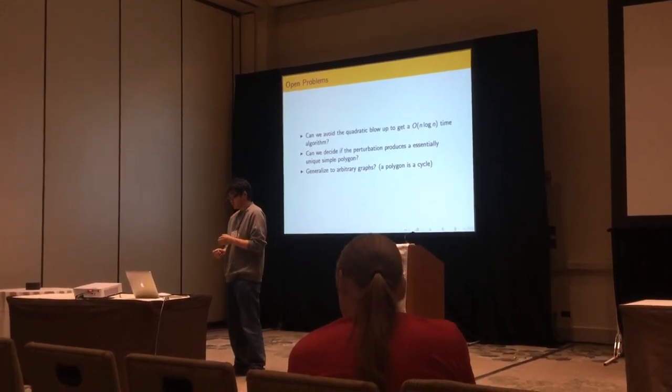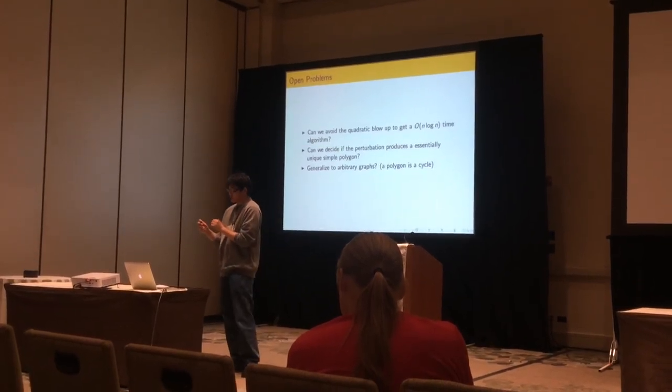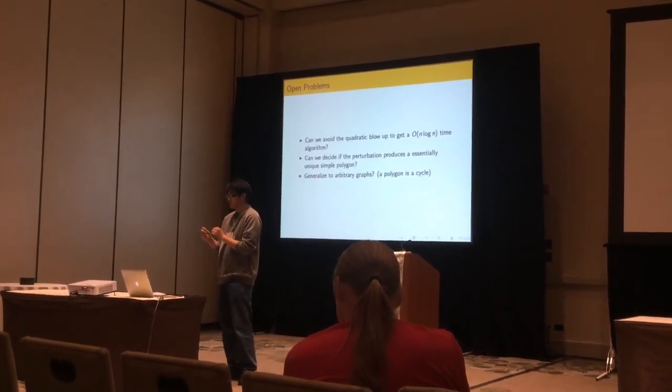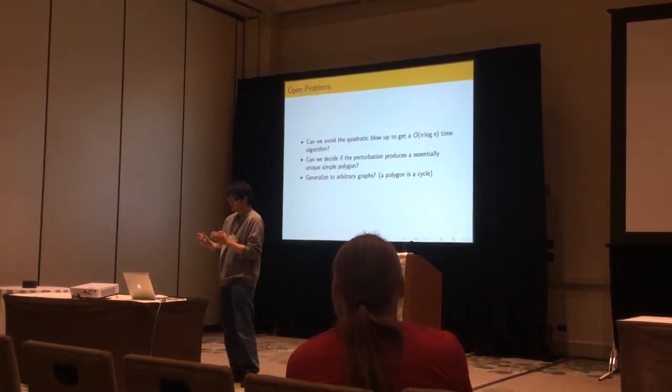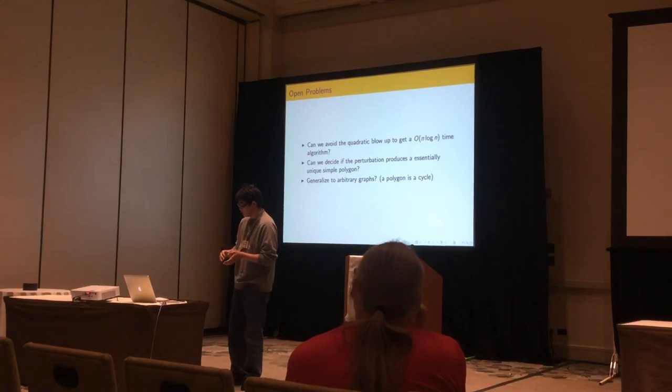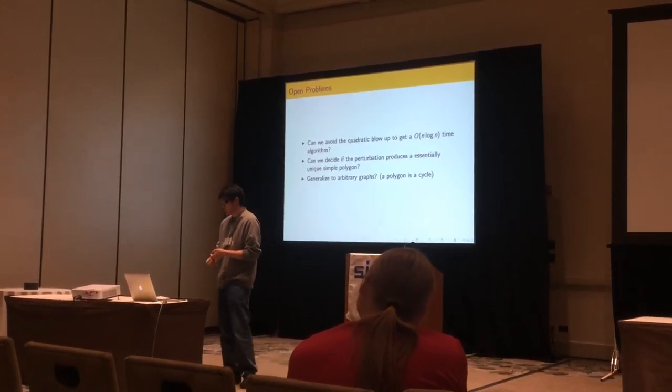The other one, can we decide if the perturbation produces essentially a unique simple polygon? So when we have spurs, there can be many ways to create simple polygons that are really close to the original weakly simple polygon. So is this unique, and can we decide?